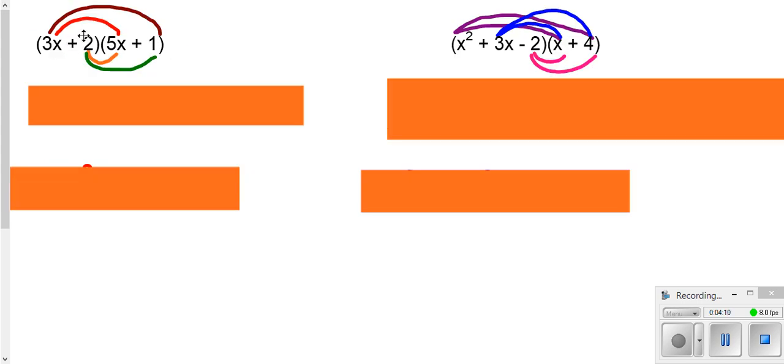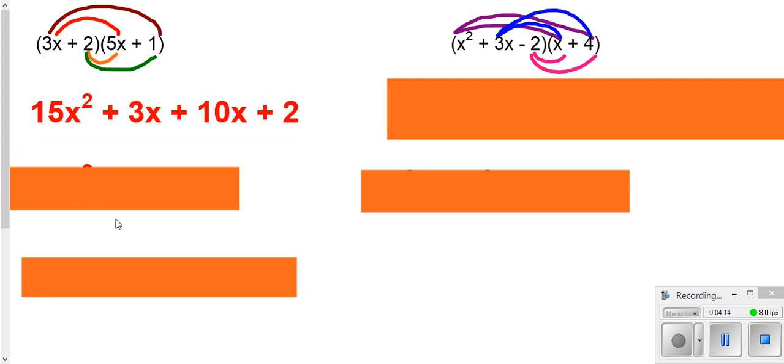We can FOIL, or take the 3x times each one, and then take the 2 times each one. And then we only have like terms of the 3x and the 10x.